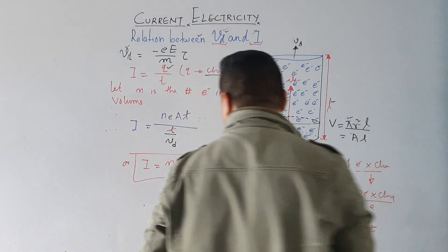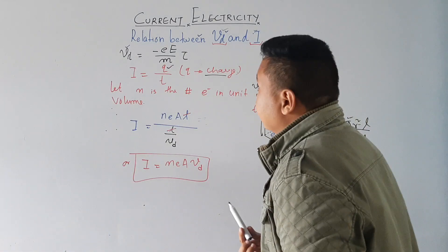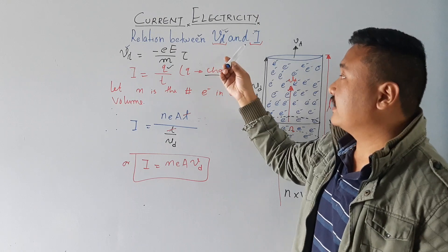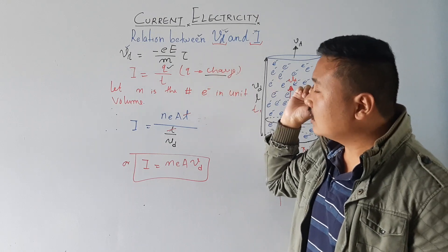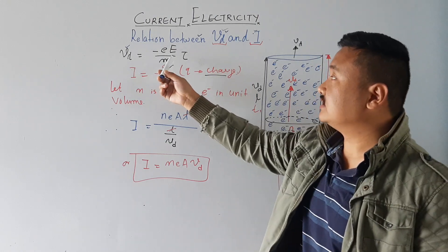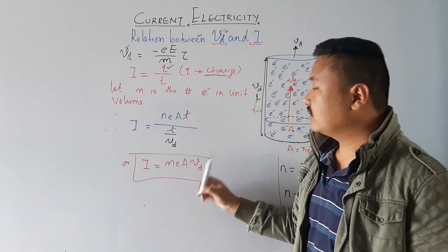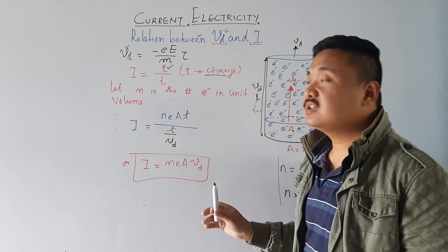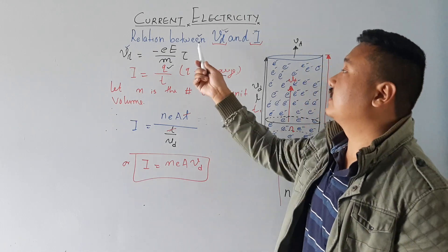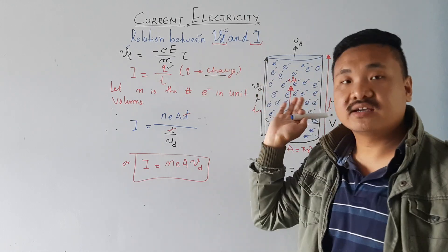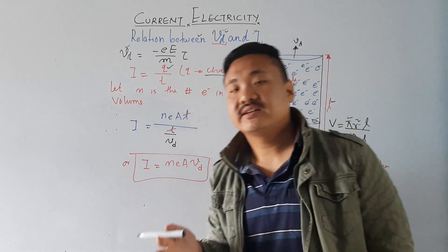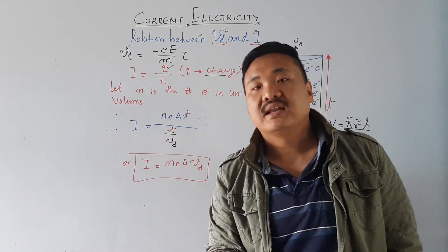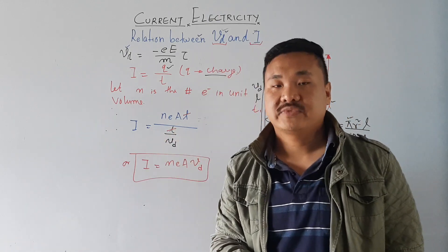This is all about the relationship between drift velocity and the current. If you want to substitute the value of drift velocity here, you can, but it is not necessary since we are finding the relation between Vd and I. In the next lecture, we will go to the mobility and the relaxation time. Thank you.